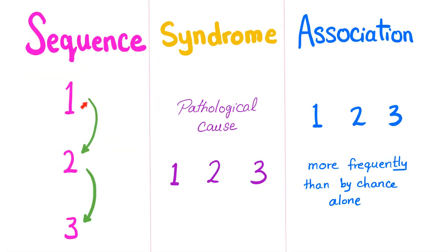You have a sequence, which means event one led to event two, which led to event three — for example, the Potter sequence. A syndrome has a pathological cause and then multiple findings — one, two, three — not directly related to each other but coming together for some reason. For instance, you have metabolic syndrome or Syndrome X: abdominal obesity, high blood pressure, high blood sugar, high serum triglycerides, low serum HDL. Stuff that comes together but one has nothing to do with the other — we call this a syndrome.